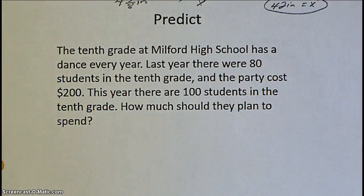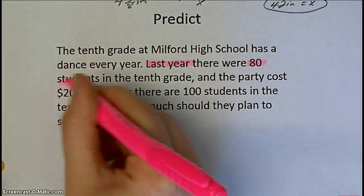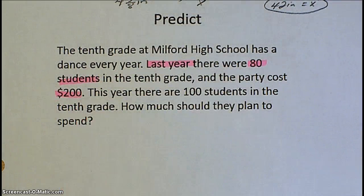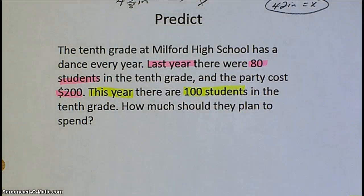Here's a word problem that you could also use proportions to set up and predict budgeting or estimating for the next year what you would need. In this example, Milford High School is planning a dance based on the information from last year. Last year there were 80 students, and it cost them $200. This year there's 100 students, so the question is how much money would they need to budget for this year?